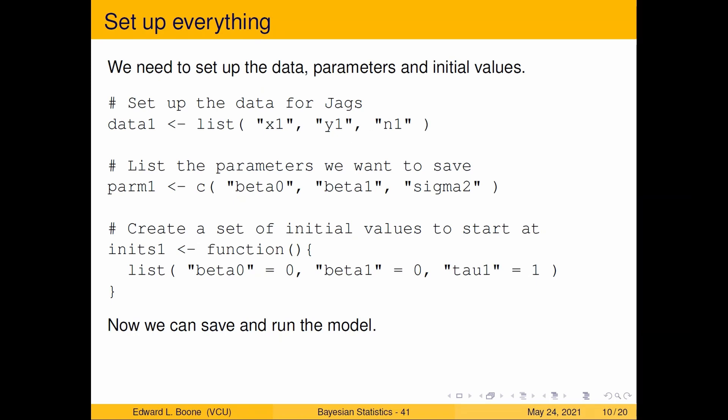We're going to set up our data here. We've got a list x1, y1, and n1. Those are the ones we peeled off the data earlier and we're just saying hey these are the variables that we are going to use. The parameters we want to save off are beta zero, beta one, and sigma squared.